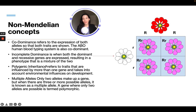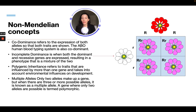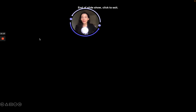Polygenic inheritance refers to traits influenced by more than one gene and also takes into account environmental influences on development. There are also multi-alleles — only two alleles make up a gene pair, but when three or more possible alleles exist, it is known as a multi-allele. A gene where only two alleles are possible is termed polymorphic. That is the end of this module — make sure to take the quiz, and I'll see you in the next module.